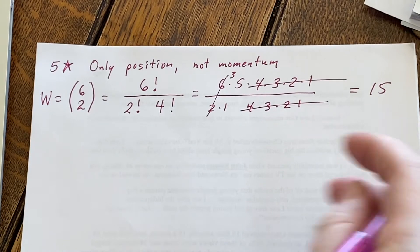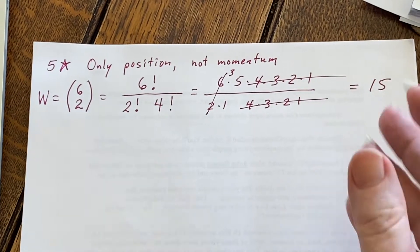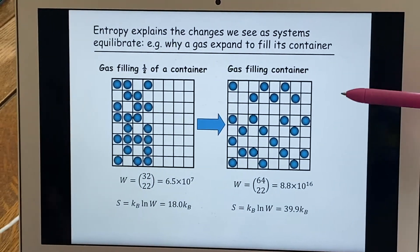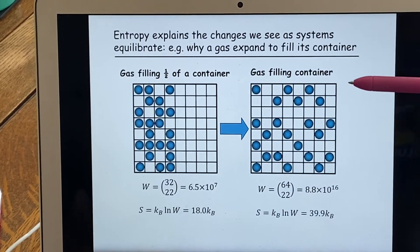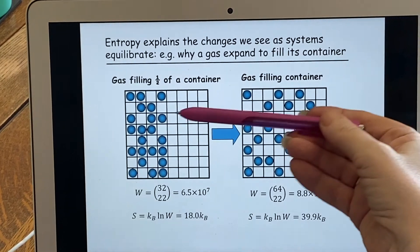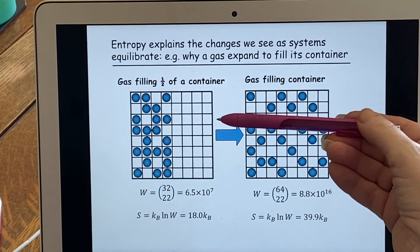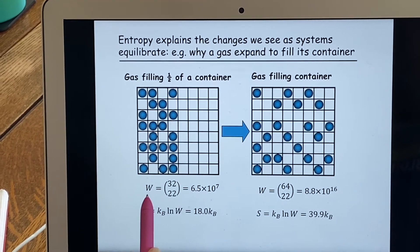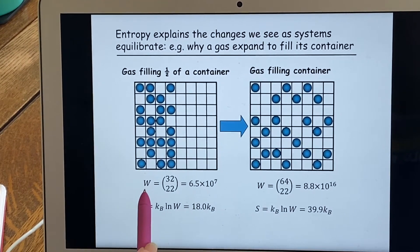So this is how you would do a problem where there were very few items. And this will help us understand why things do what they do. Why does a gas decide that it's going to fill the whole container? If we look at W, the number of microstates, we can understand that.